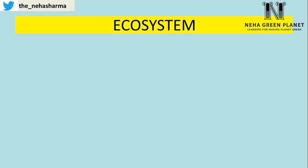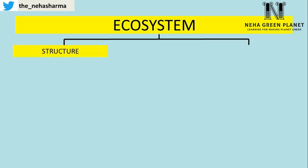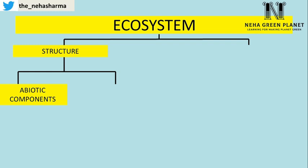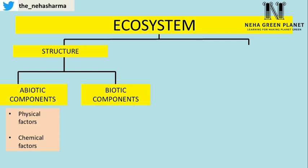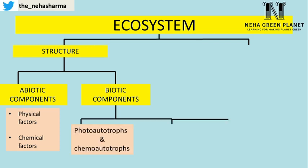Ecosystems can broadly be classified according to the components or functions present in them. Ecosystem has a structural component — structural meaning the things which are present inside the ecosystem. Structural components are of two types: abiotic components like physical factors and chemical factors. Physical factors include humidity and temperature. Chemical factors include oxygen, carbon dioxide, water, and other chemicals present in a place.